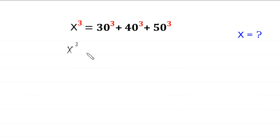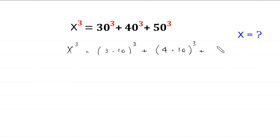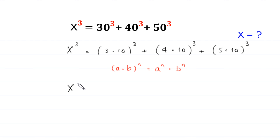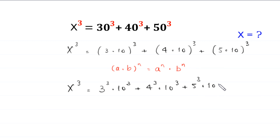x cubed is equal to — 30 is the same as 3 times 10, whole cubed, plus 40 is the same as 4 times 10, whole cubed, plus 50 is the same as 5 times 10, whole cubed. Now by using the power rule — a times b, whole to the power n, is equal to a to the power n times b to the power n — this becomes x cubed is equal to 3 cubed times 10 cubed plus 4 cubed times 10 cubed plus 5 cubed times 10 cubed.